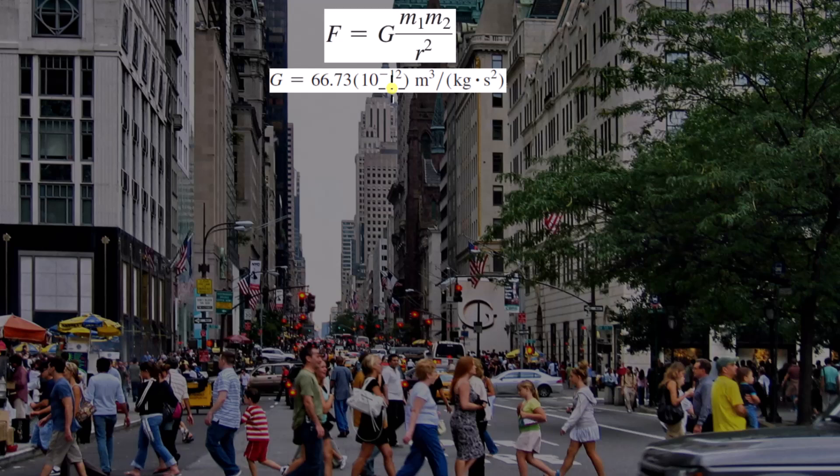Their gravitational forces are still present, but you don't see them all of a sudden gravitating towards each other. Because those forces are so small, their masses are so small.